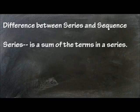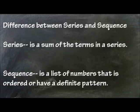A series is the sum of terms in a series while the sequence is a list of numbers that is ordered or have a definite pattern.